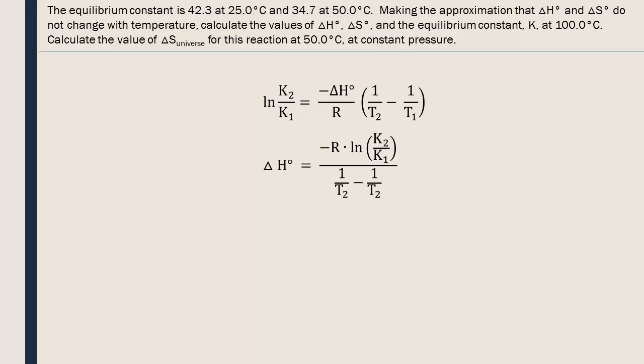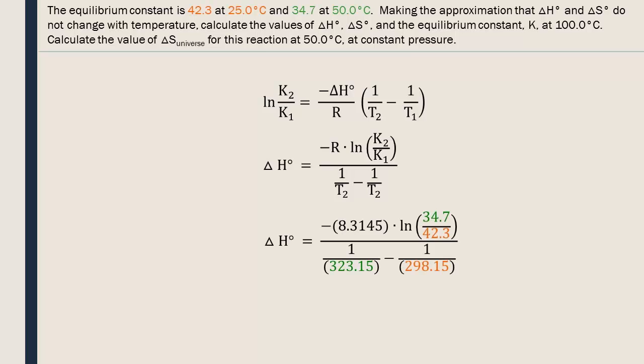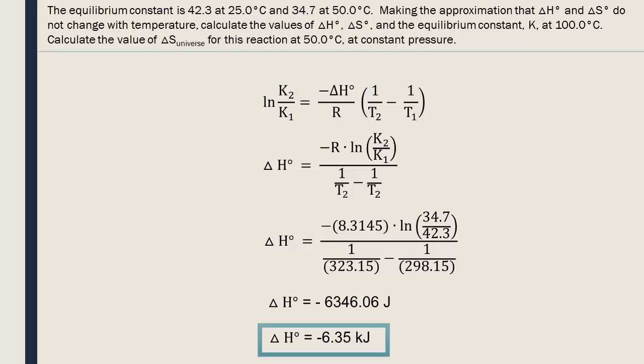We rearrange the equation to solve for standard delta H, and place the values given to us into the equation. T1 is 25 degrees Celsius and T2 is 50 degrees Celsius. Make sure to transform the temperature values into kelvins. The standard enthalpy variation is negative 6,346.06 joules. We put our final answer in kilojoules and round it to three significant digits, since the least precise data from the question also had three significant digits.